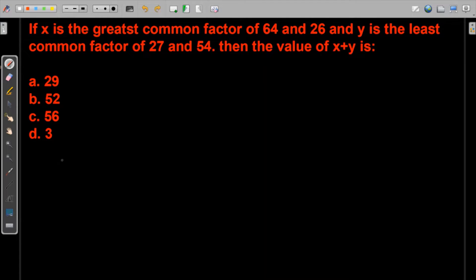If that is the case, then if x is the greatest common factor, then the greatest common factor will be of 64 and 26. So what is the procedure? We factorize these two numbers and try to find out the common factors in between both.